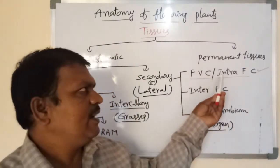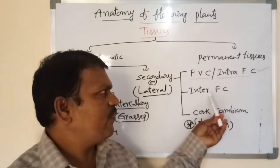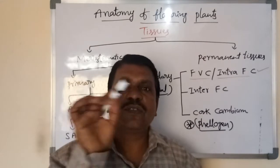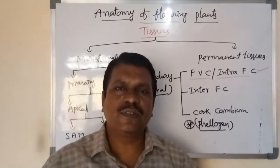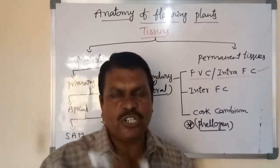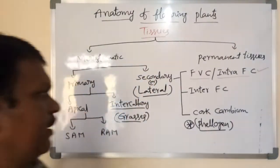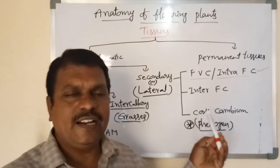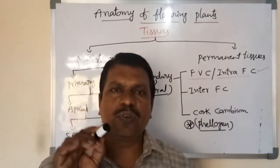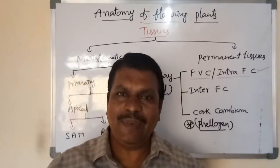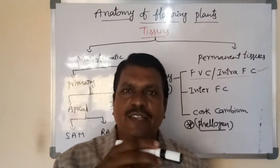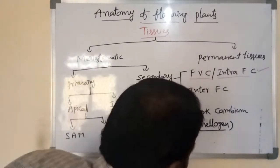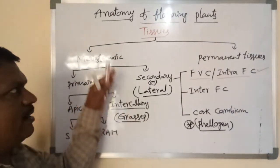Intrafascicular cambium and interfascicular cambium combine to form a complete ring called the vascular cambium ring. These three types of secondary meristems together play a crucial role in growth of the stem in girthwise or circumference — that is called secondary growth. This is a brief mind map regarding different types of tissues. Meristematic tissues are completed; now go through permanent tissues.